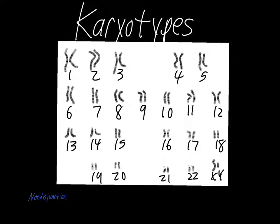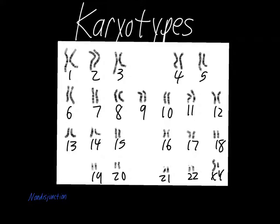A woman's karyotype would look different — instead of having one large chromosome and one small one, they would have two X chromosomes. So effectively they get two chances to get each of those good genes. It's not impossible for a woman to have hemophilia or color blindness, it's just far less likely than it is for males. It's ultimately the banding pattern and the size of the chromosomes that allows the geneticist to pair all of these up.